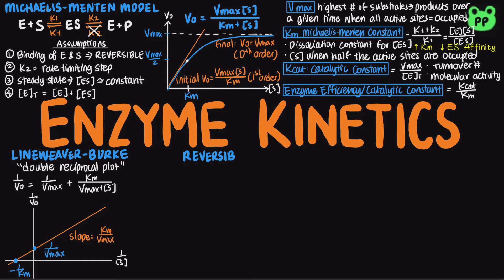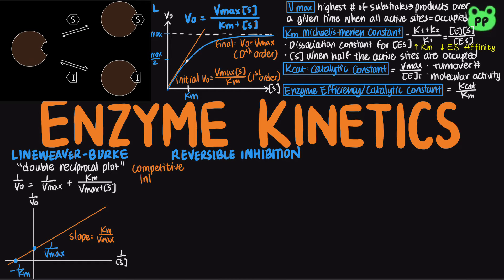Enzymes are subject to both reversible and irreversible inhibition. There are three main types of reversible inhibitors. A competitive inhibitor competes with the substrate for the active site of an enzyme.